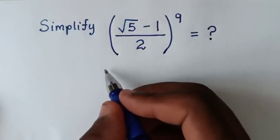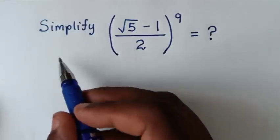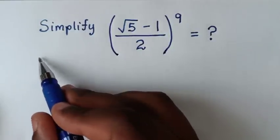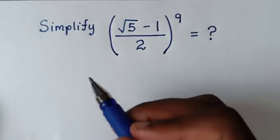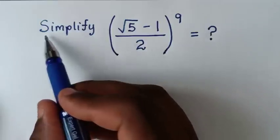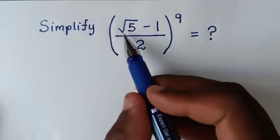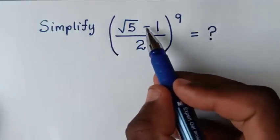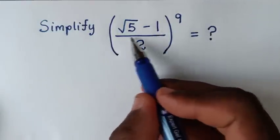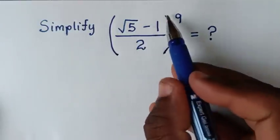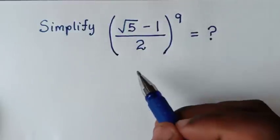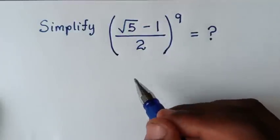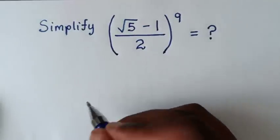Welcome. This problem is asking us to simplify: square root of 5 minus 1, over 2, bracket, raised to the power of 9.